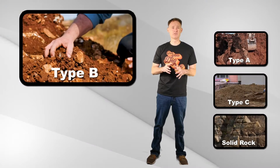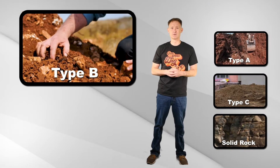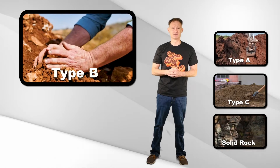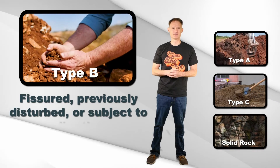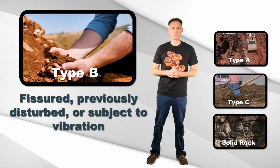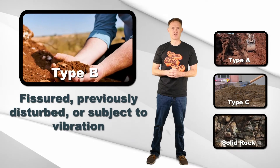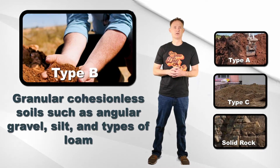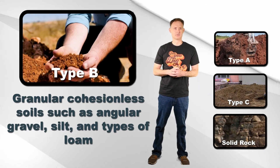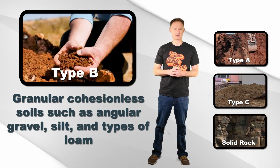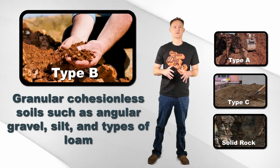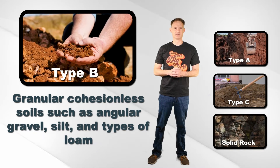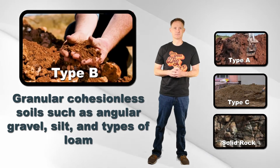Type B soil is any soil that would be considered Type A soil except that it is fissured, previously disturbed, or subject to vibration. Granular cohesionless soils such as angular gravel, silt, and types of loam can also be considered Type B soils.